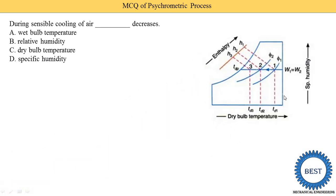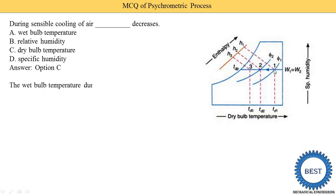Before moving on, I show this sensible cooling process on the psychrometric chart. This 1-2-3 process indicates sensible cooling. We see that the inlet temperature is Td1 and at the outlet the temperature is reduced. So during cooling, the dry bulb temperature is decreased — option C is the correct answer — and specific humidity remains constant, meaning W1 equals W2. Relative humidity also changes during the sensible cooling process.